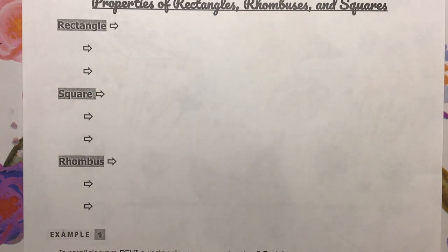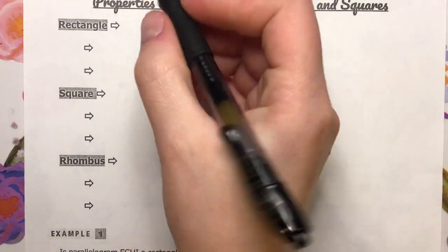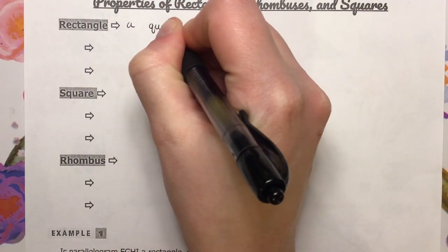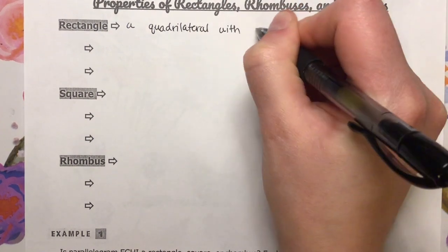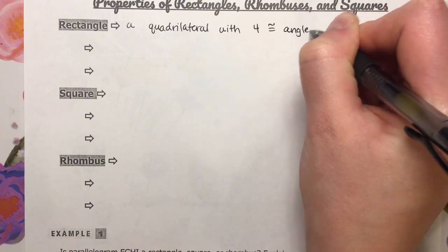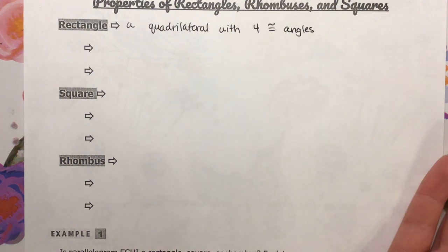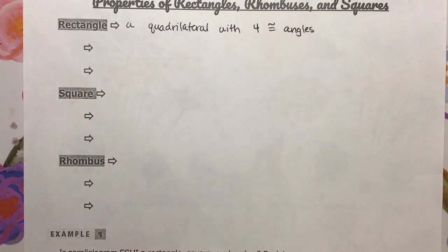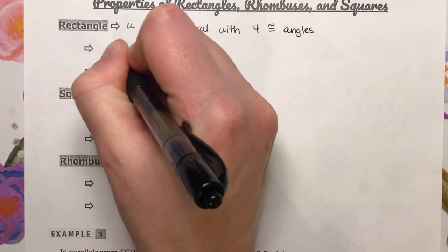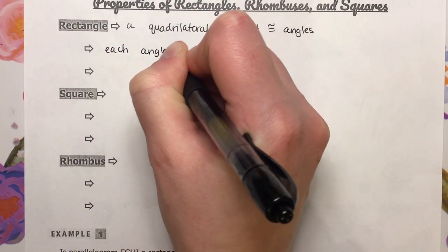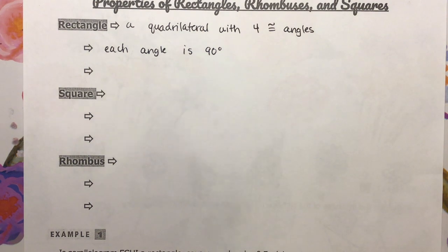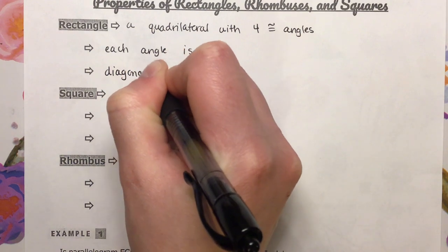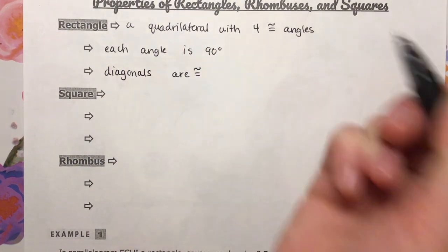To begin with, what is a rectangle? Well, it is a quadrilateral with four congruent angles. And because they're all congruent, that means all of its angles are going to be 90 degrees. So each angle is 90 degrees. Also, rectangles have diagonals as well, and the diagonals are congruent.